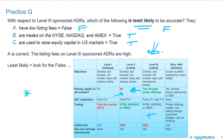You need to memorize the differences between Level 1, Level 2, Level 3, and Rule 144A. The key distinction is whether it's listed or not, and for listed ADRs, Level 3 raises new capital while Level 2 does not.